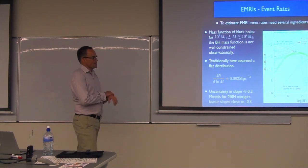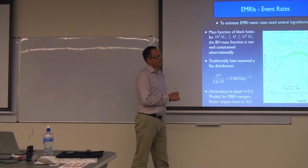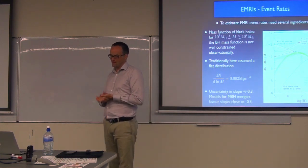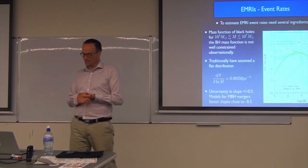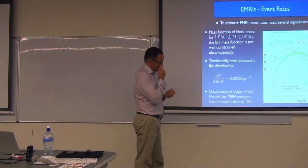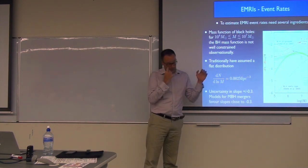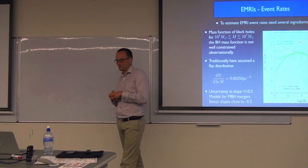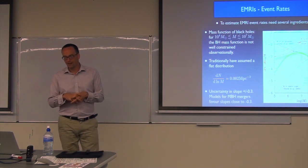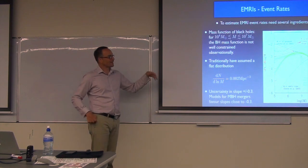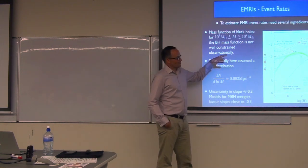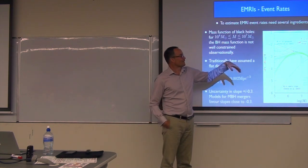How many EMRIs are we likely to see? Unlike the LIGO case, we don't have LISA yet, so we haven't measured this number, and we can only try to predict it. I'll go through some aspects of that, which will mostly indicate that we really don't know, but we do have numbers, and the numbers are not zero.